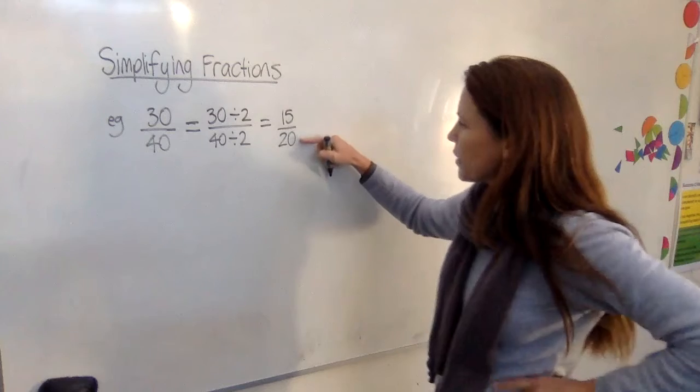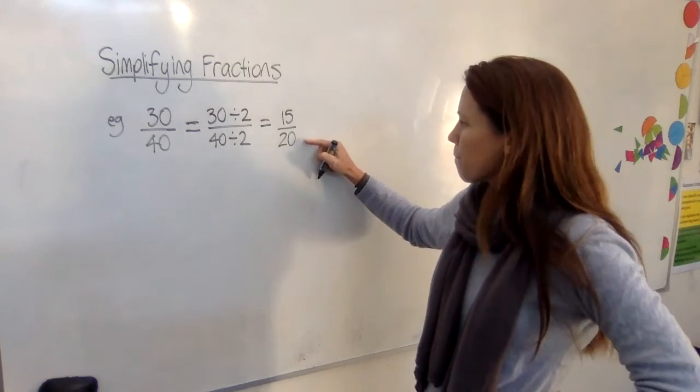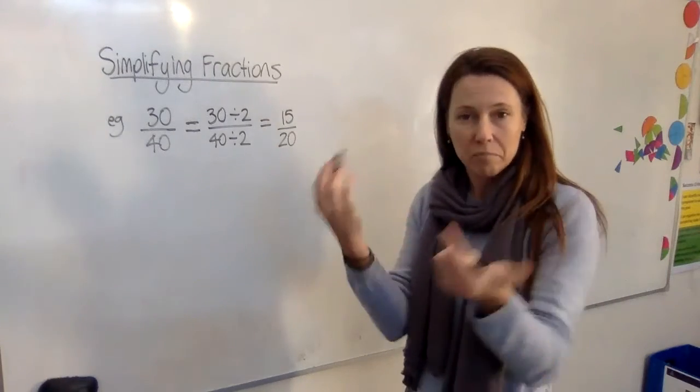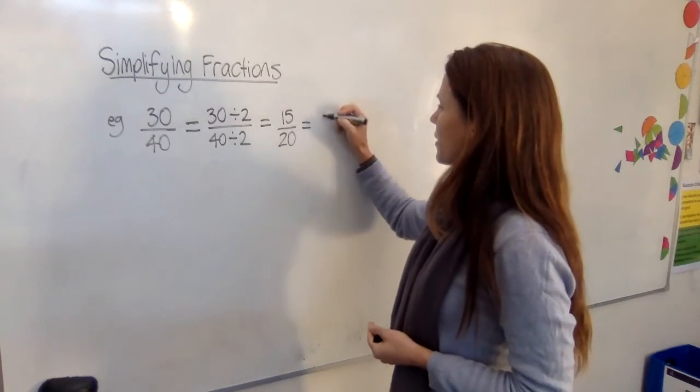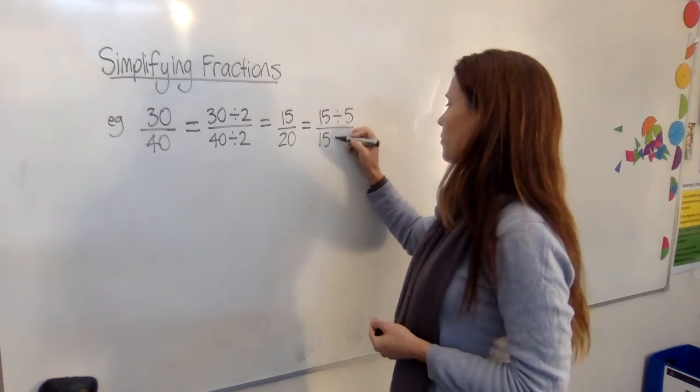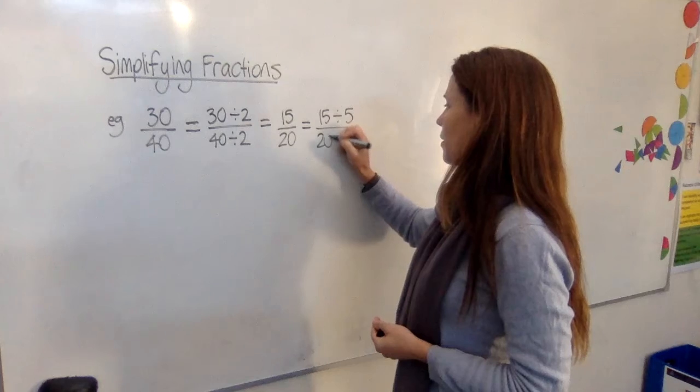All right, now look at 15 and 20. Do they share any common factors? Yep, both in the five times tables. So I'm going to divide them by five. So we say that's equal to, if we took this one and divided it by five, and we took that one and divided it, oops, 20, and divided it by five.